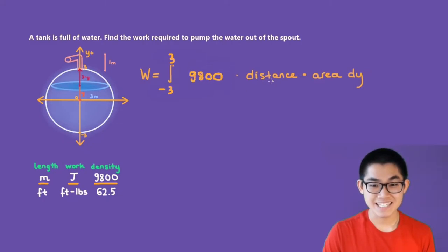As for the distance, we're moving each layer of water to the top. We're moving from here to the top and the distance that we're moving to the top is three minus Y.